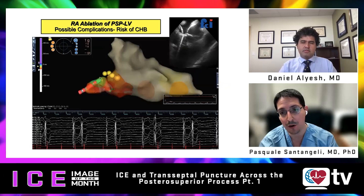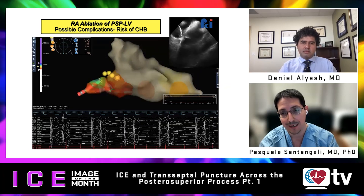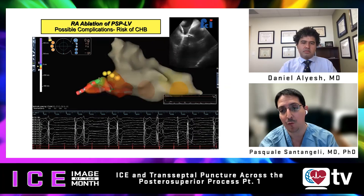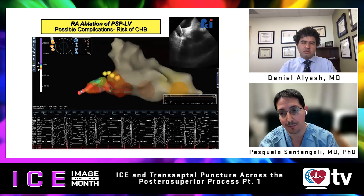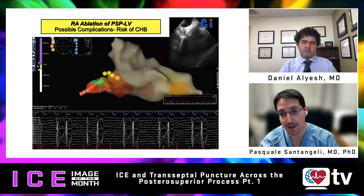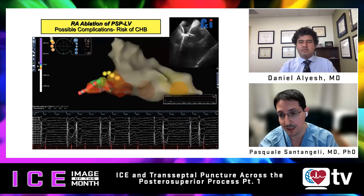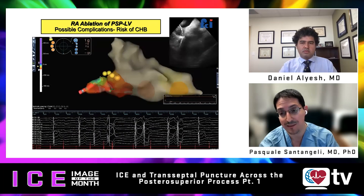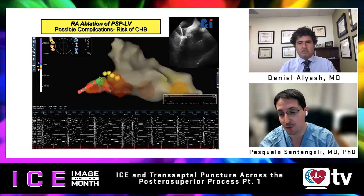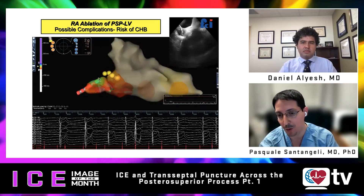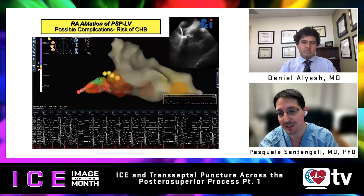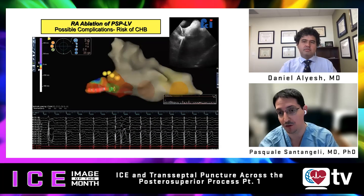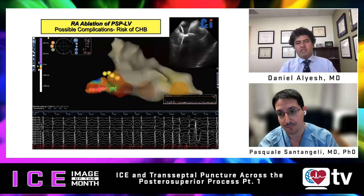Occasionally the catheter slides a little more laterally — passing closer to the tricuspid valve — essentially hitting the slow pathway region. Ablating there can potentially damage the AV node. Another possibility in this case was injury to the AV nodal artery. Conduction did recover afterwards. In our experience with radiofrequency — and even when using a wire and balloon in that specific area — we have not yet seen persistent heart block.